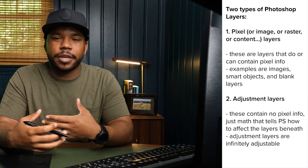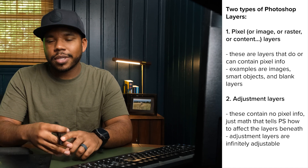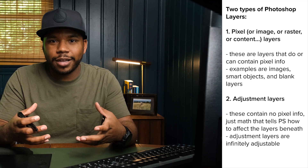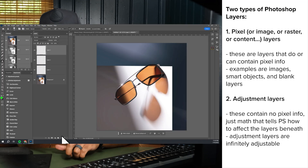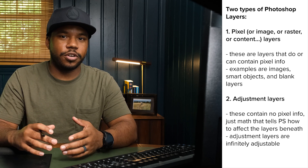In Photoshop, there are two different types of layers, primarily. First, there are pixel layers — you'll also hear them referred to as content layers, raster layers, or image layers. It all means the same thing: a layer that has pixel information in it, or can have pixel information in it. This includes your blank layers, stamp visible layers, your background layer, any other image layers, and any linked or embedded smart objects you've brought into your file.